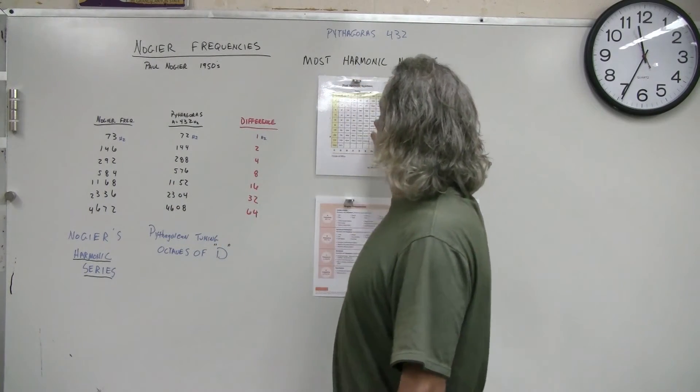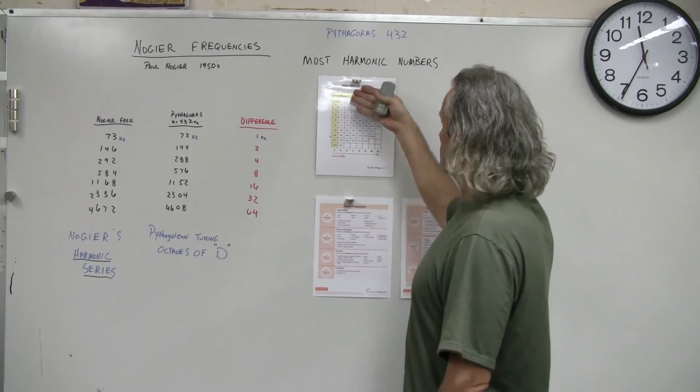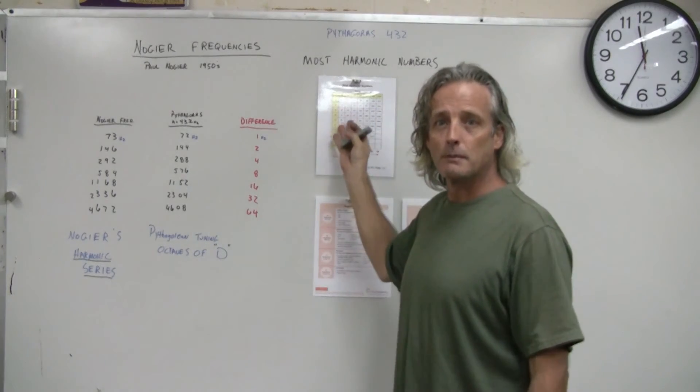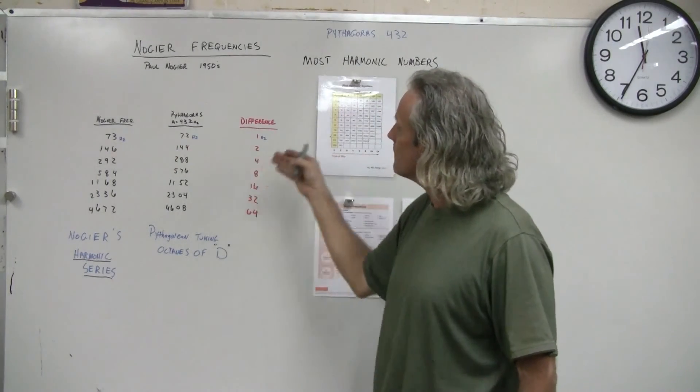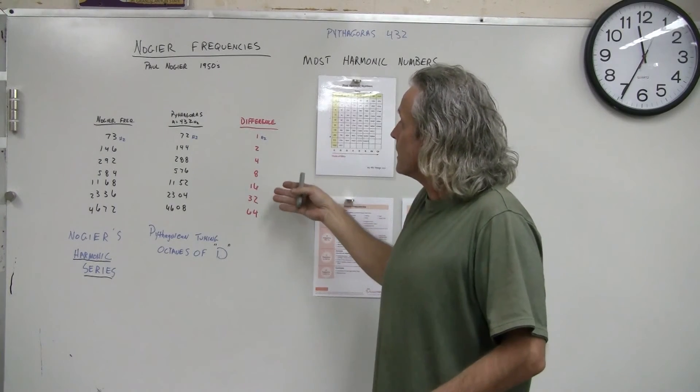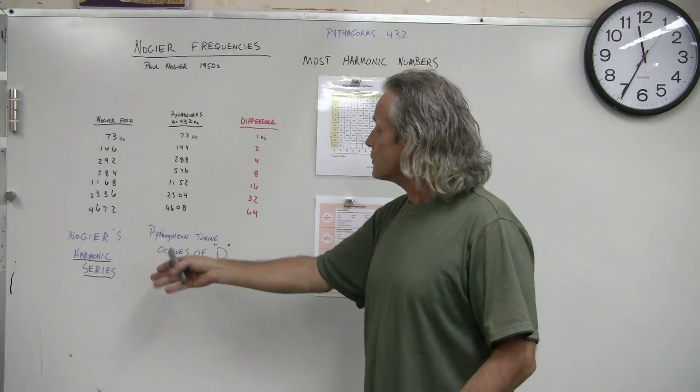Because Nogier had to have known about this. He had to have known of Pythagoras' work. He had to have known about these frequencies. How else could he come up with something so mathematically perfect here in his harmonic series?